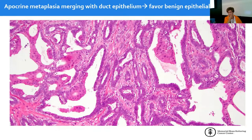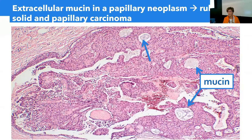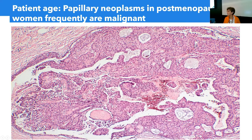A few helpful tips for evaluating epithelial proliferation: if there is apocrine metaplasia merging with the duct epithelium in a papillary lesion, this generally favors a benign epithelial proliferation. Extracellular mucin in a papillary neoplasm should make you think about solid papillary carcinoma, which is often associated with mucin production. Patient age is also important—papillary neoplasms occurring in postmenopausal women tend to be more frequently malignant.